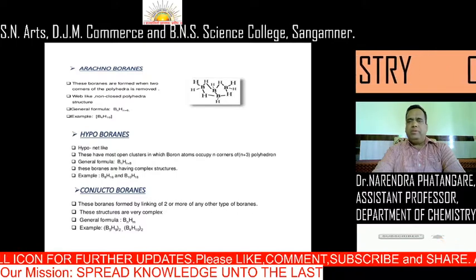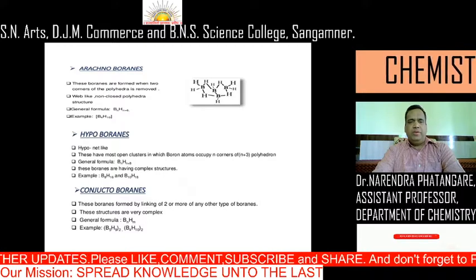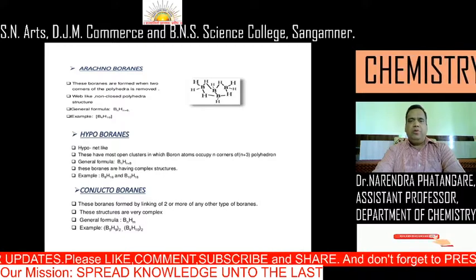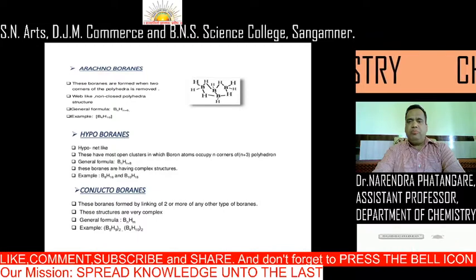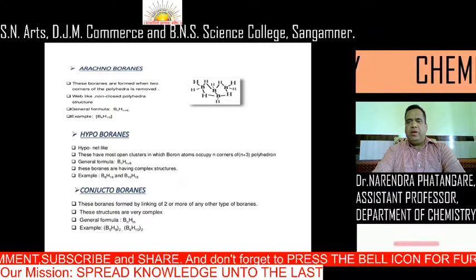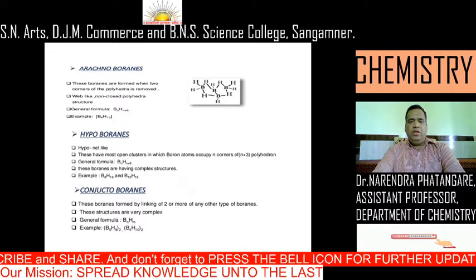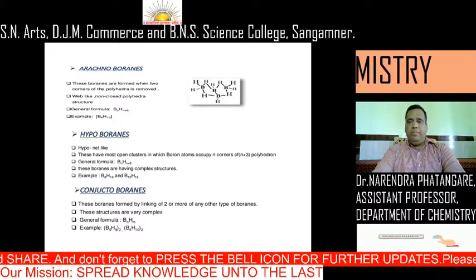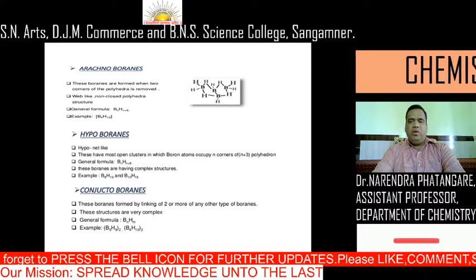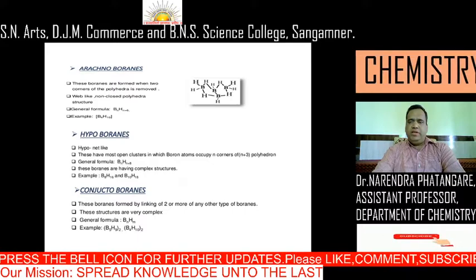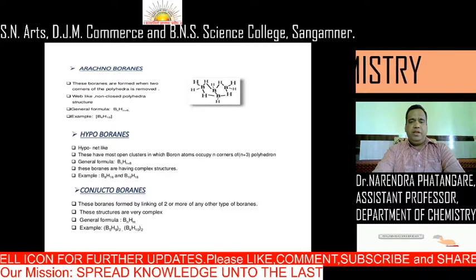The third type is arachno boranes. These boranes are formed when two corners of the polyhedron are removed. It is a web-like, non-closed polyhedral structure. The general formula is BnHn+6. For example, B4H10. The fourth type is hypho boranes — these have the most open clusters, in which boron atoms occupy n corners of an n+3 polyhedron, with general formula BnHn+8. Examples include B8H16 and B10H18.